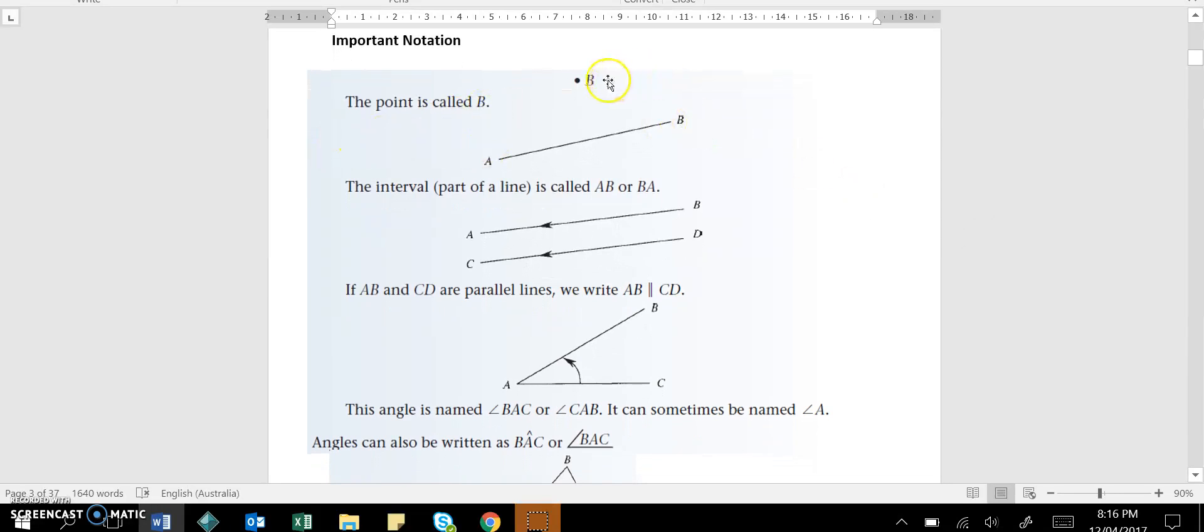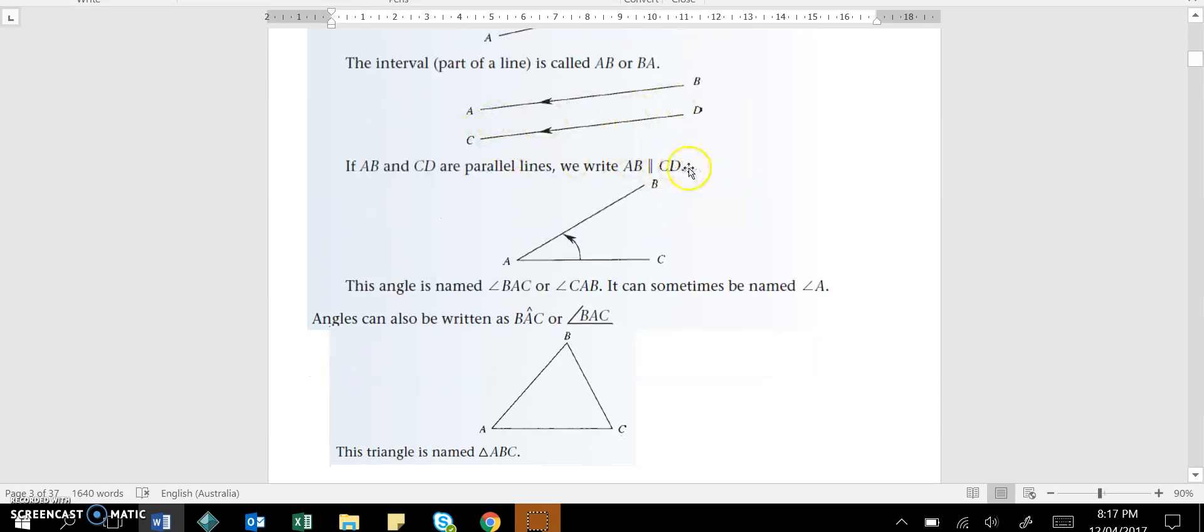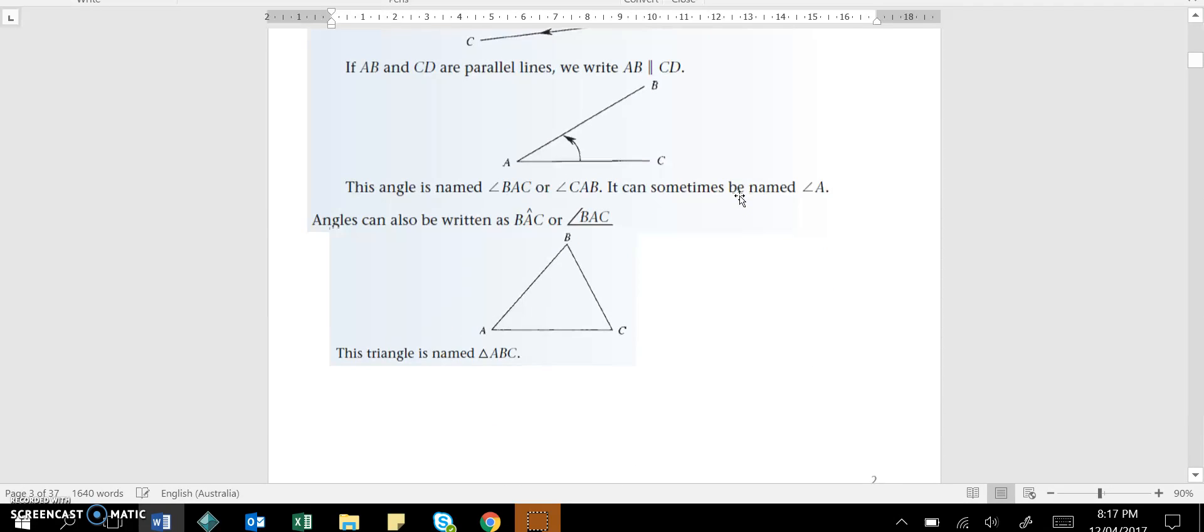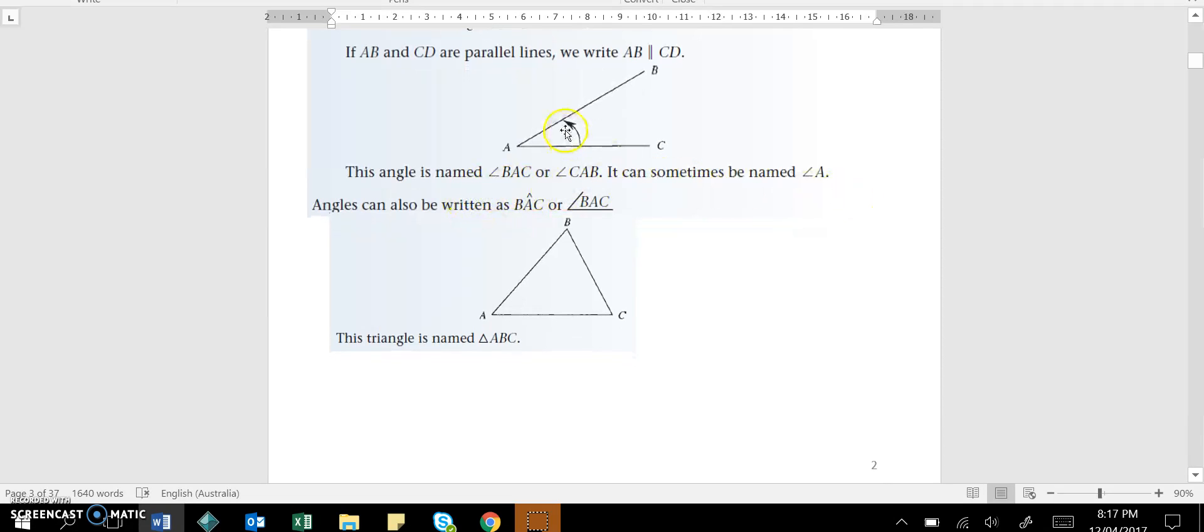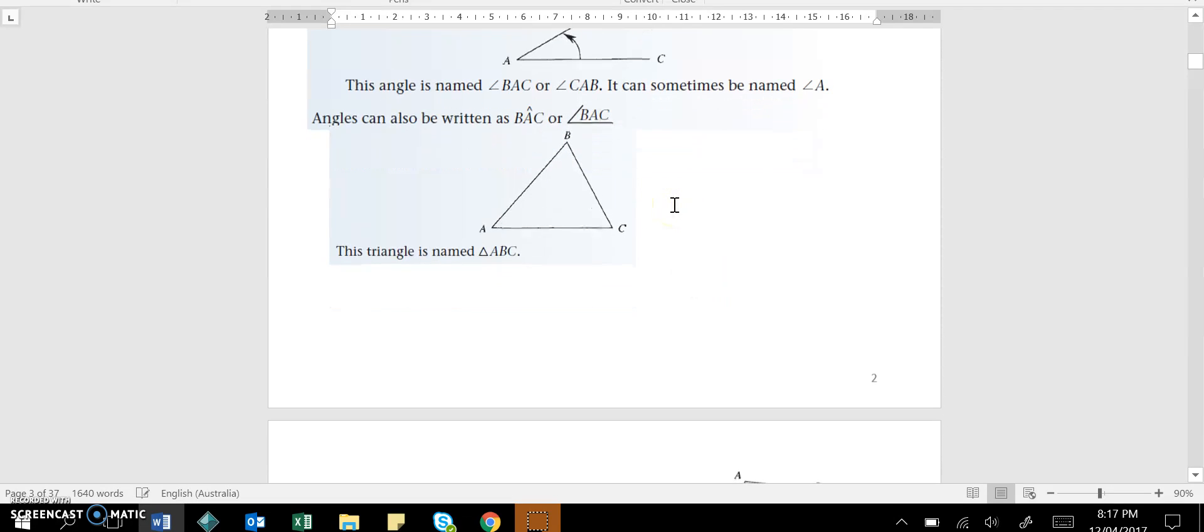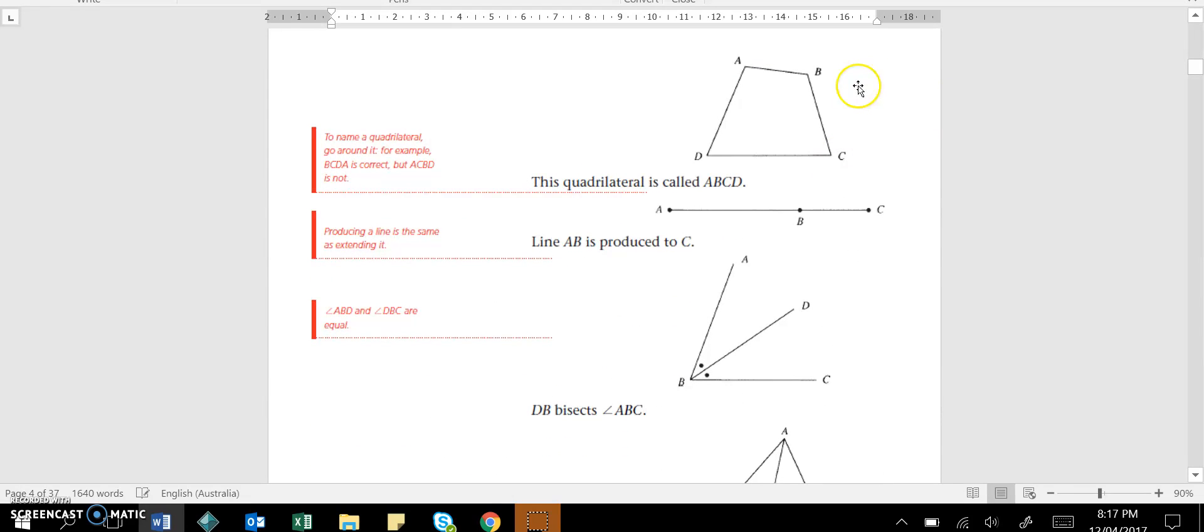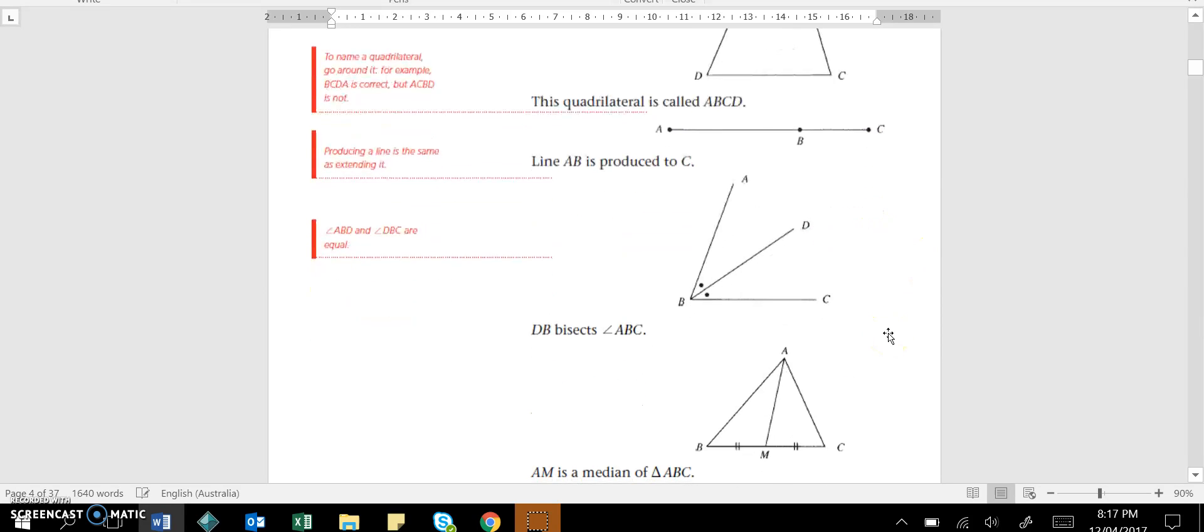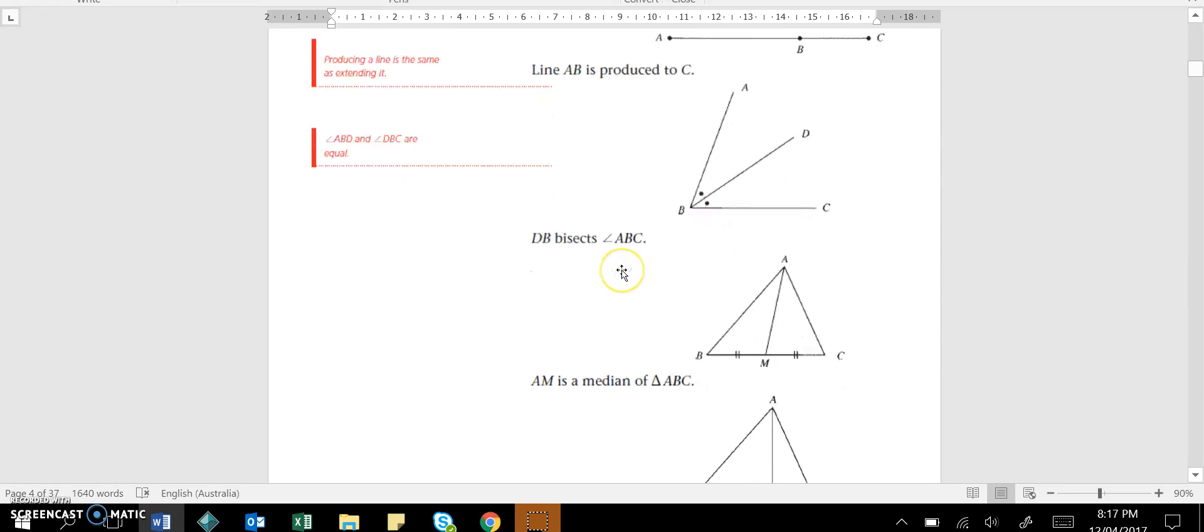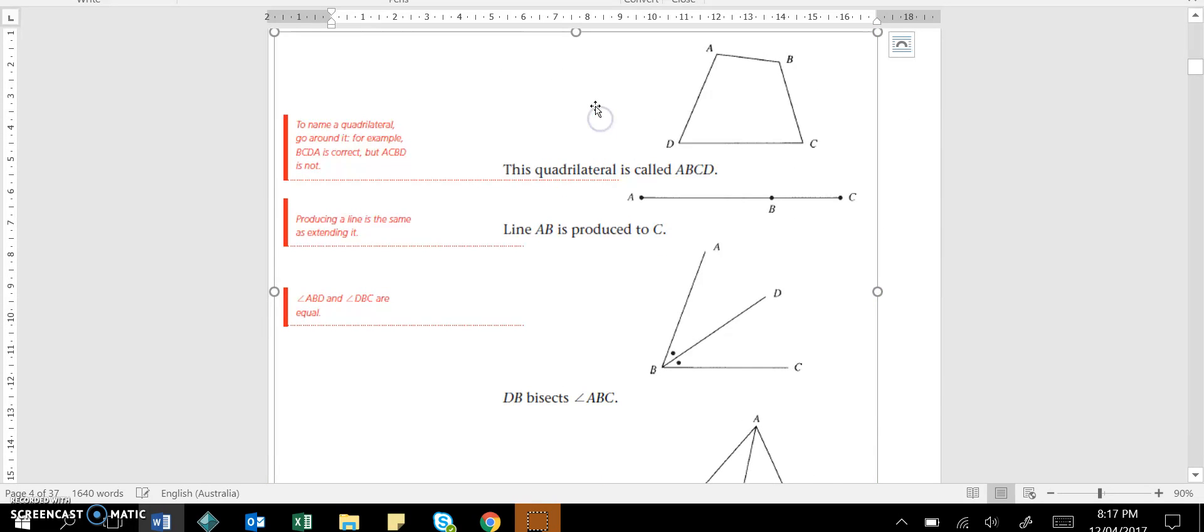So for example, very basic things like a point would be called B. An interval is a part of a line, in this case AB. If there's two parallel lines we write them like this in this notation. We can name angles in different ways, you can see that here. This one you might not be familiar with, so make sure you read through that. These are just out of your textbook by the way. How to name triangles, how we name quadrilaterals, how we produce some lines. What it means to bisect an angle, so cutting an angle in half.